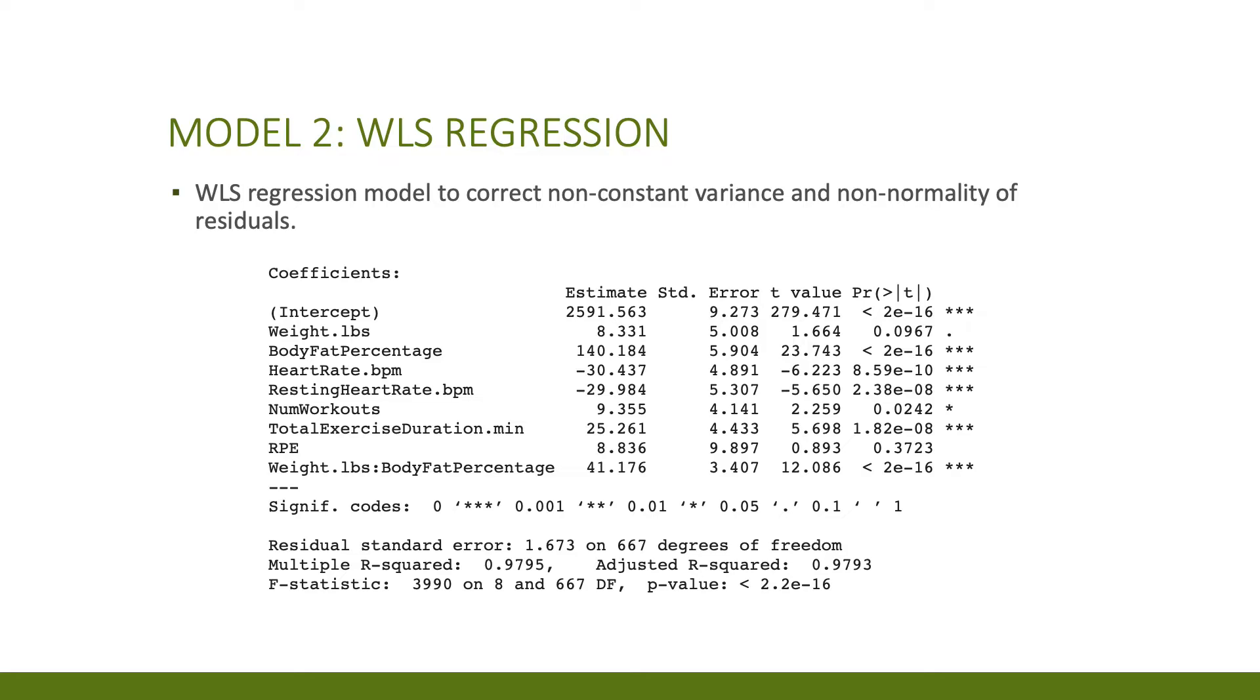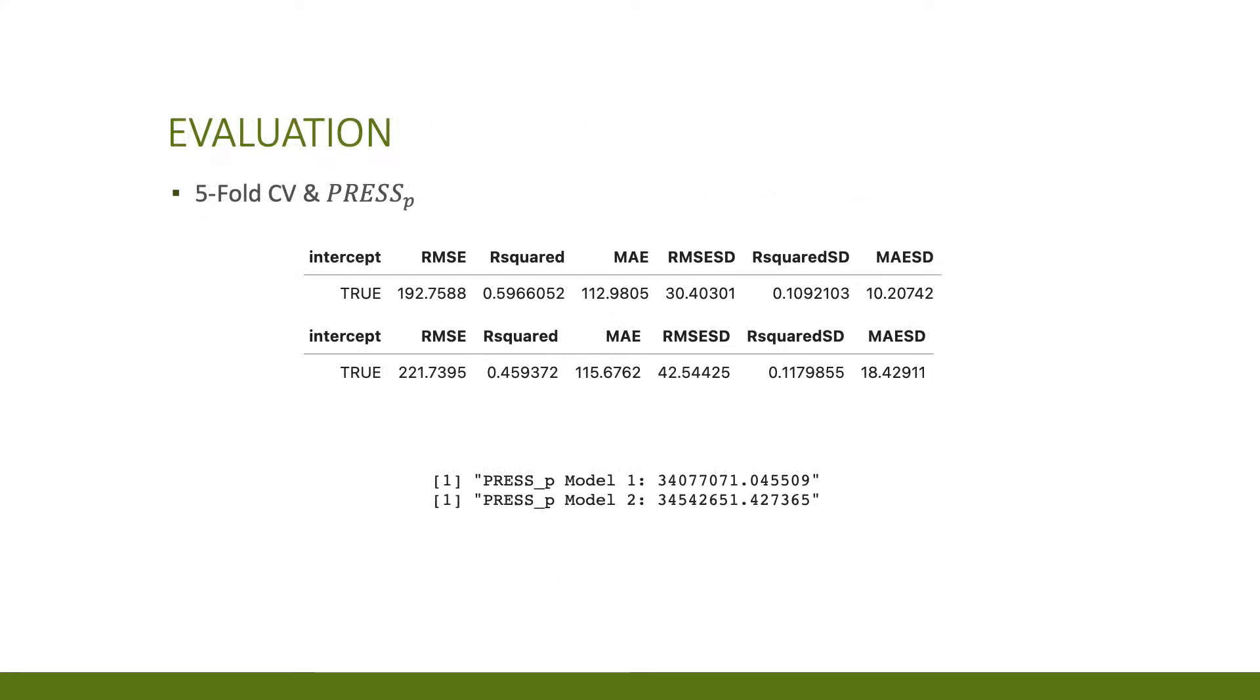To correct these violations, I built a model with weighted least squares regression. Upon performing cross-validation and looking at the PRESS values, it's clear that the first ordinary least squares model is better, despite some assumptions still being violated.